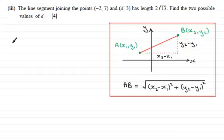So using that result, we know that the length 2√13 must be equal to the square root of the difference between the x coordinates squared plus the difference between the y coordinates squared. Now it doesn't really matter which way around you put your x coordinates or your y coordinates. -2 - d or d - (-2) would give you exactly the same result when you square it.